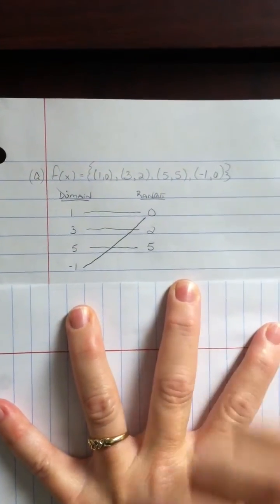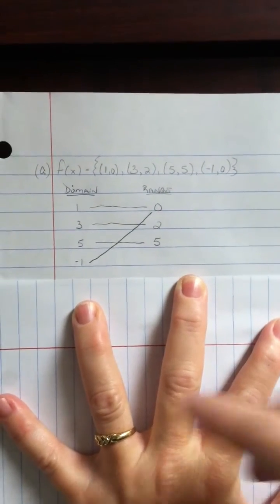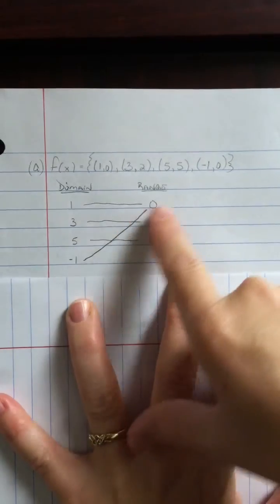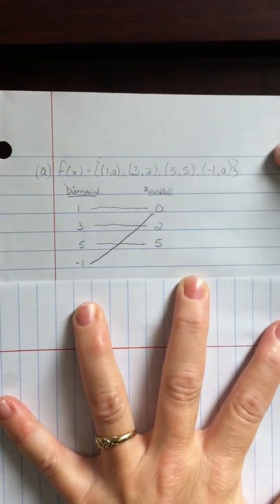This one is not a one-to-one because a one-to-one states that you have to have one domain to one range. And you clearly see that two numbers from the domain go to one of the range numbers.